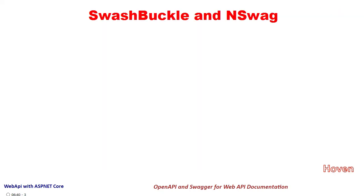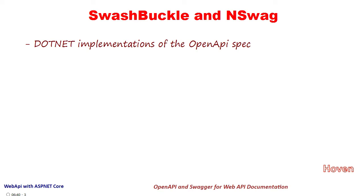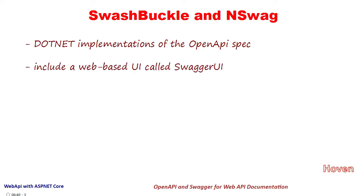Let us discuss Swashbuckle and nSwag. Swashbuckle and nSwag are two main .NET implementations of the OpenAPI or Swagger specification. Both of them include a web-based UI called Swagger UI. As an ASP.NET Core developer, we do not have to worry about the finer details of Swashbuckle and nSwag because everything is handled for us by the ASP.NET Core engine.